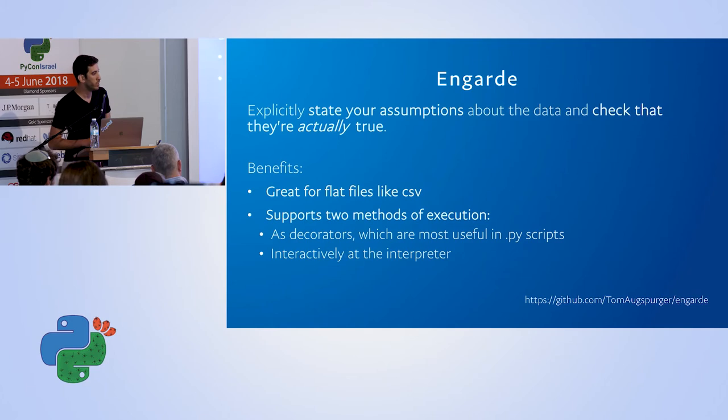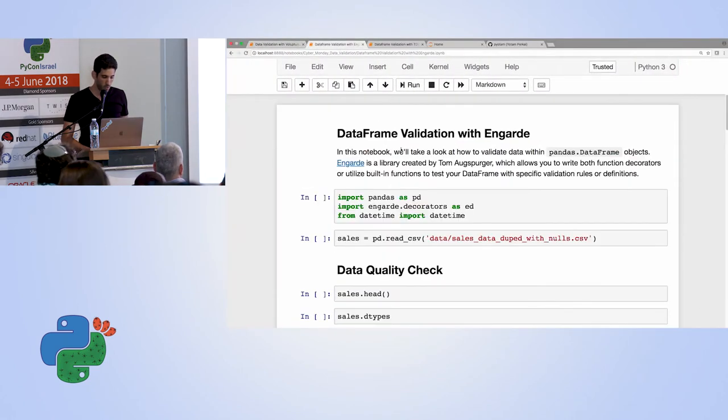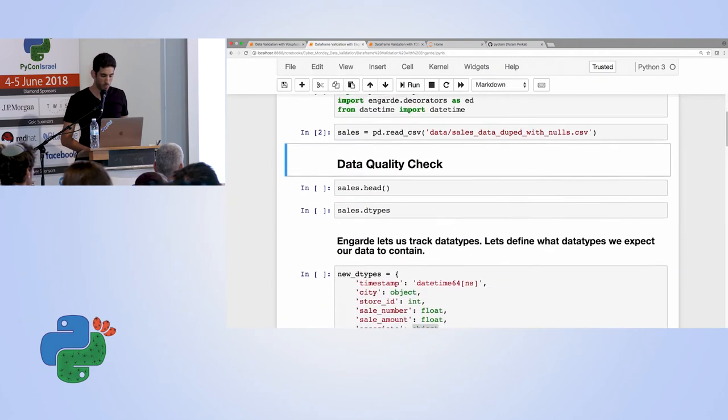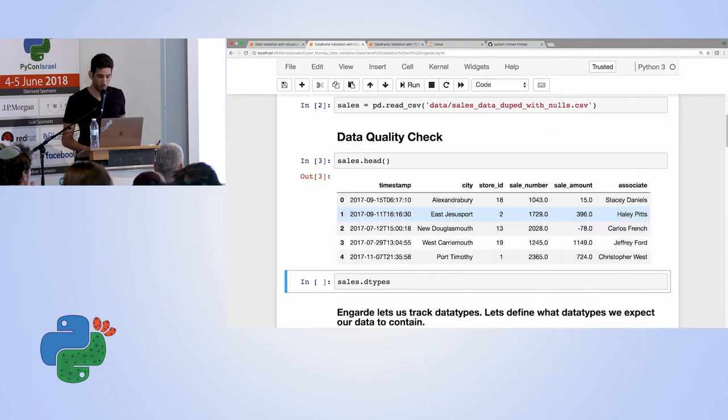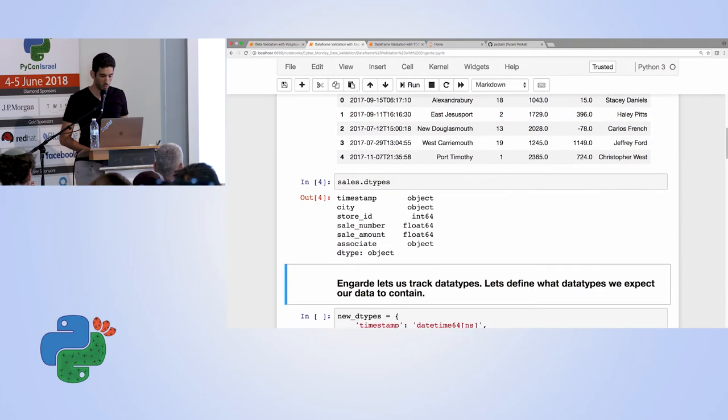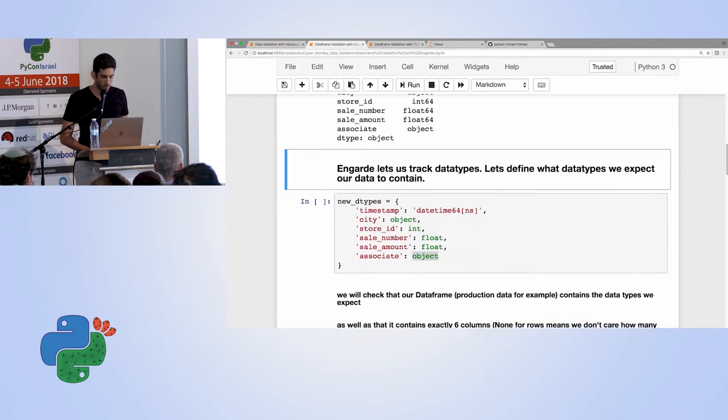The second library I want to discuss is called EngGuard. EngGuard basically lets you make assumptions about your data and then test to see whether those assumptions actually hold true. So let's see how it works. Again, we have some imports. I'll use the same data set. So we're already familiar with it. For sales, with the data types.